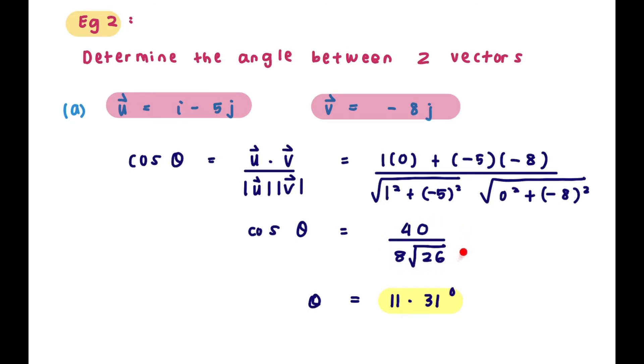So after you simplify, this is your right hand side. Therefore, you can find theta by finding inverse cos of this value here. So your answer is 11.31 degrees.